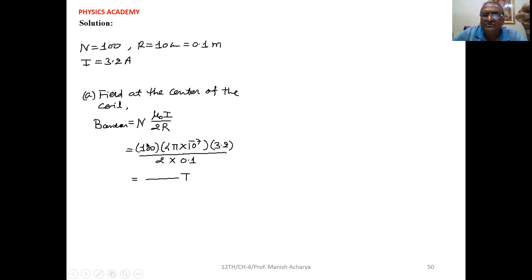Substitute the values: N is 100, μ₀ is 4π × 10⁻⁷, current I is 3.2, 2 into R is 0.1. Solve this one and you will get the answer.